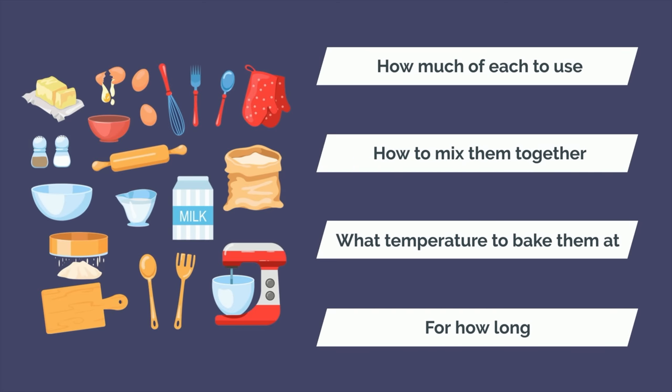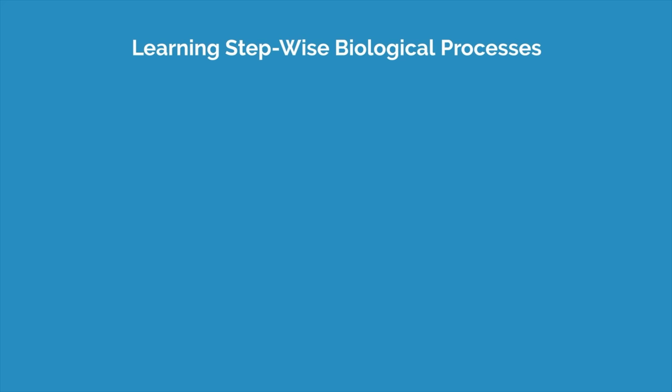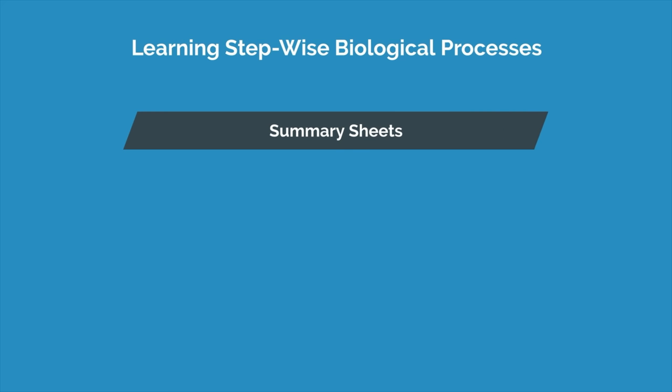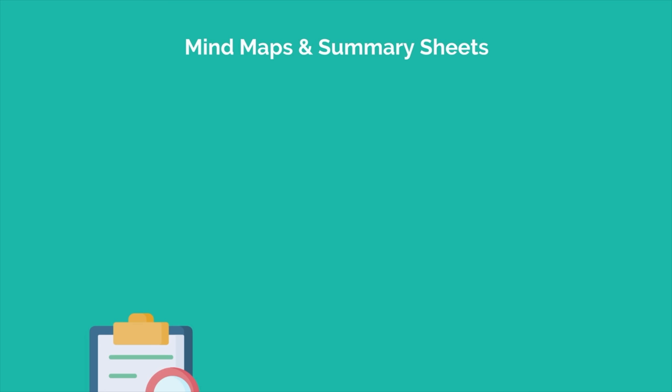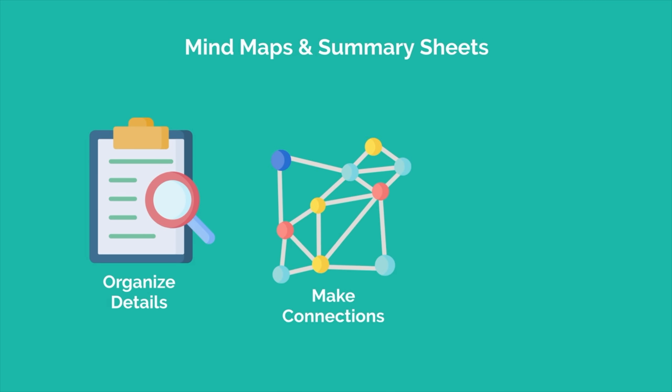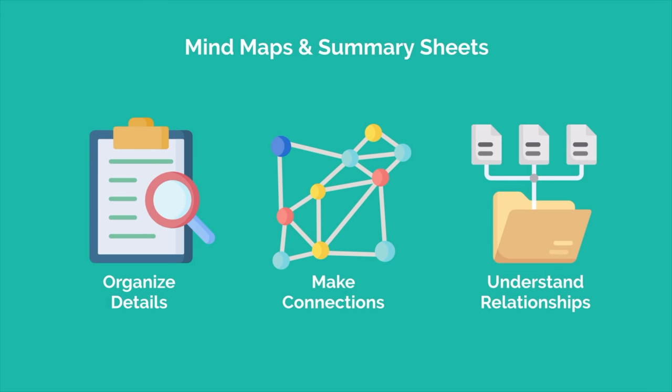When learning stepwise biological processes, techniques such as summary sheets, drawing mind maps and diagrams, and the Feynman technique are much more effective. Whereas flashcards are good for dialing in the small details, these techniques force you to organize those details, make connections, and understand how they fit into the bigger picture.